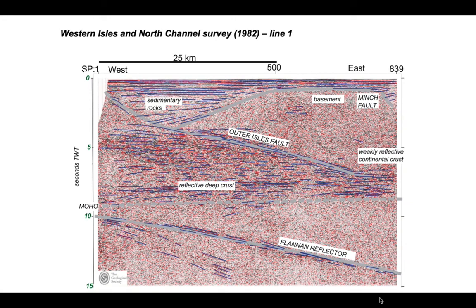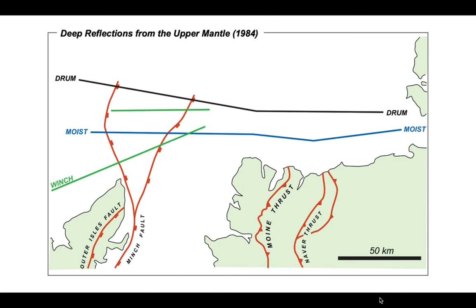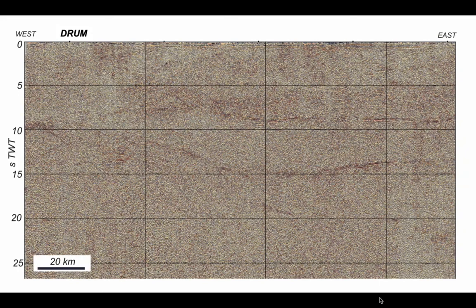Understanding these mantle reflectors became the next big thing. So with this in mind, the BIRPS program put together an experiment called DRUM — Deep Reflections from the Upper Mantle — also named after the director of the BIRPS program, DRUM Matthews. DRUM was a spectacular experiment, and seismic acquisition was adapted to maximise seeing deep and bring out the low-frequency record. The aim was to see deep, bringing out the low-frequency record characteristic of deep seismic profiles.